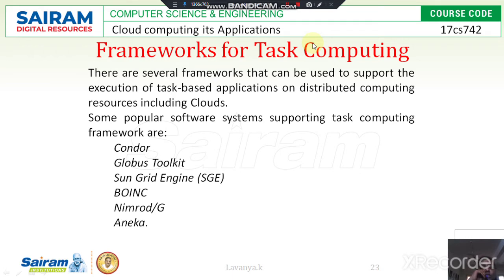The Globus Toolkit is a collection of technologies that enables grid computing. It also provides a consistent set of tools for sharing computing power, databases, different types of clusters, and other services across geographic boundaries. It provides many types of services, libraries, and resource monitoring. The Globus Toolkit addresses issues for grid computing as well as distributed environments with heterogeneous resources.